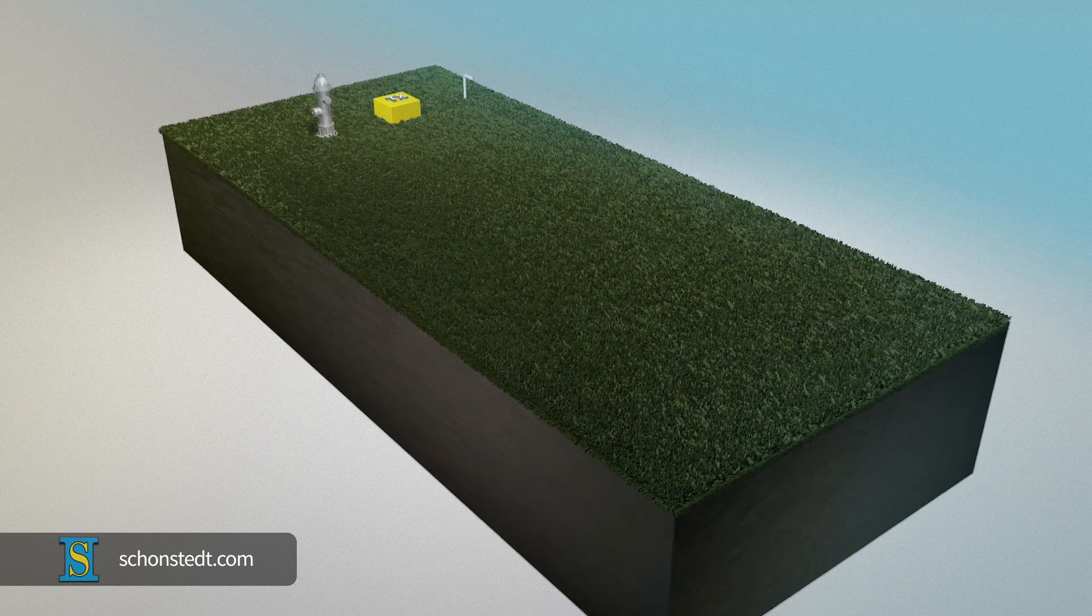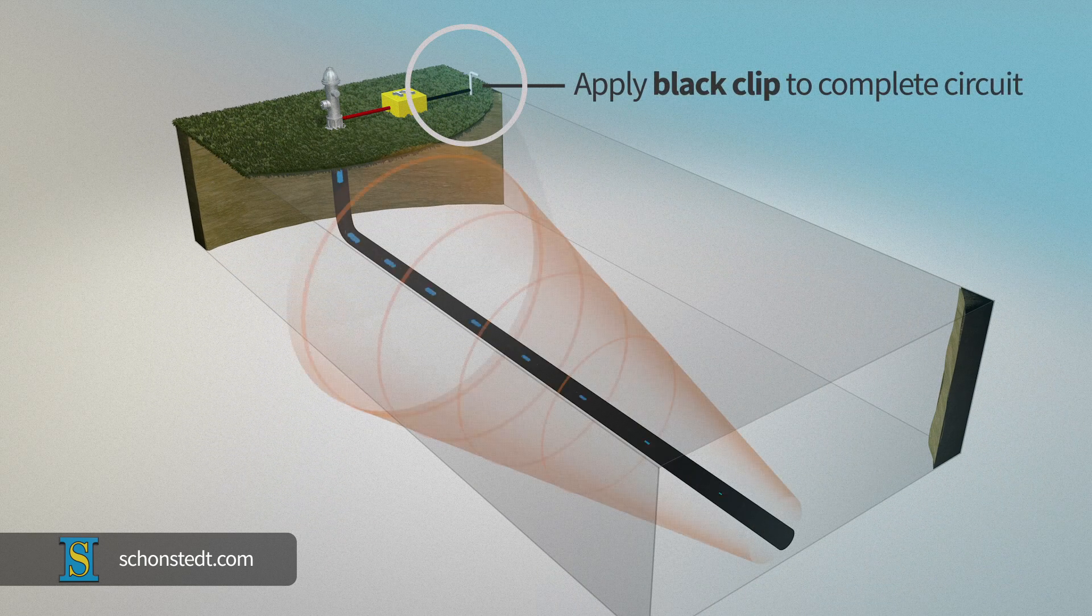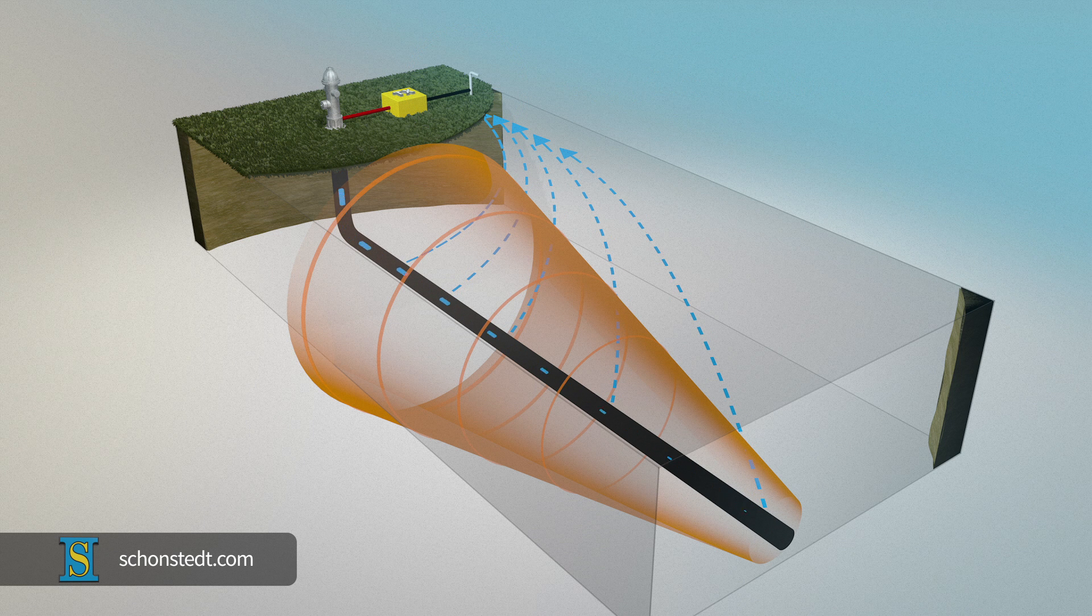Once the ground stake is in position, apply the clip attached to the black cable to the ground stake to complete the circuit. It's important to complete the circuit by properly implementing a ground.